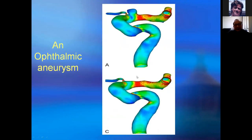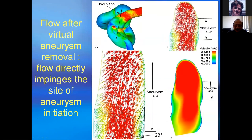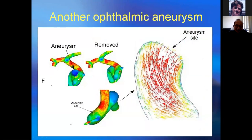This is another case at the ophthalmic segment of the internal carotid artery, with the aneurysm virtually removed. After removal, we can see blood flow directly impacting the aneurysm site. This is another ophthalmic segment case where the aneurysm was virtually removed, and blood flow is directly impacting at the aneurysm site. This figure demonstrates the aneurysm was initiated by direct flow impediment.